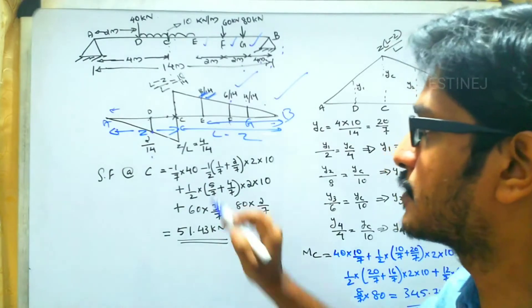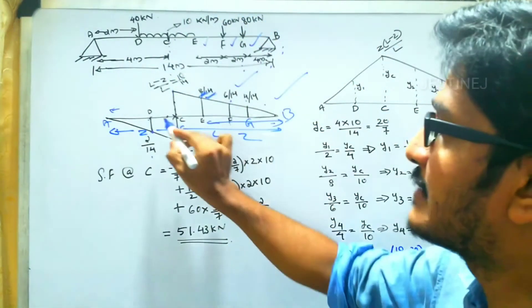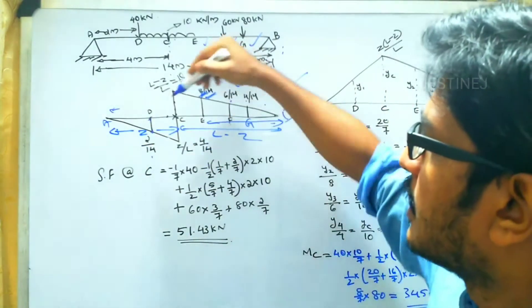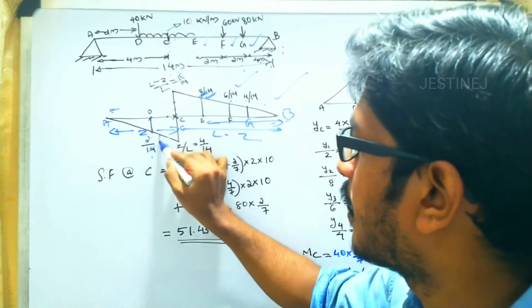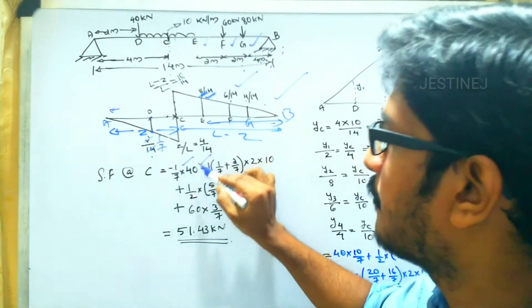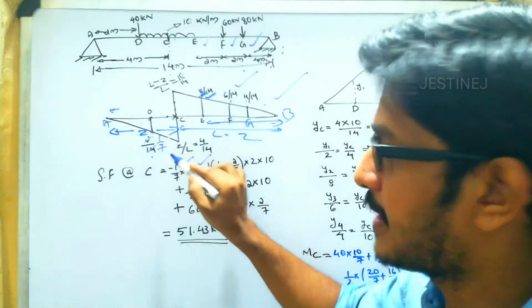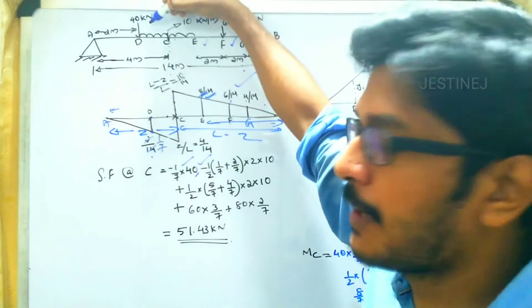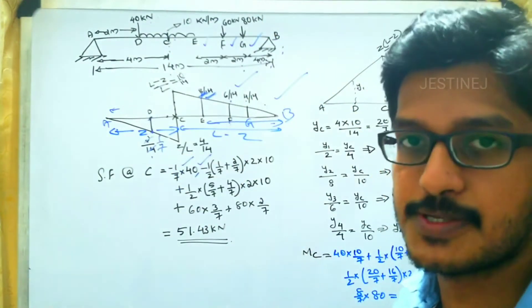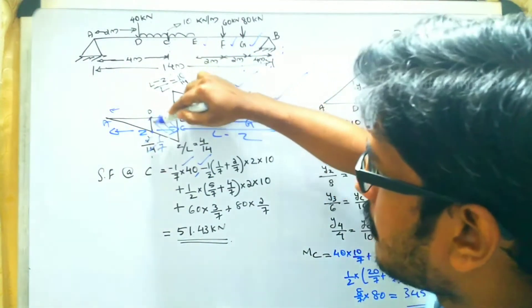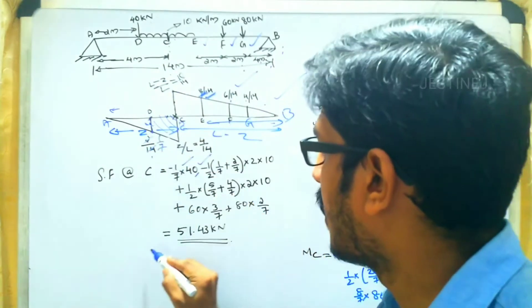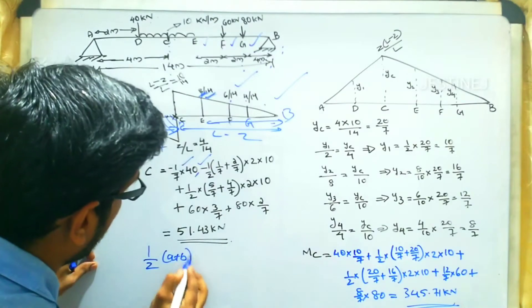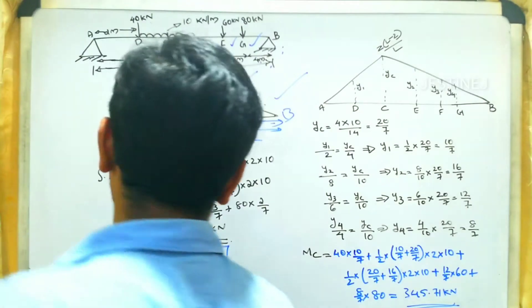Now we find the shear force at C by analyzing each point. At point D the ordinate is negative; cutting down 2/14 gives 1/7, so the contribution is −(1/7) × 40 kN. For the UDL region, we find the area under the influence line, which is trapezoidal. The trapezium area formula is ½ × (A + B) × distance.